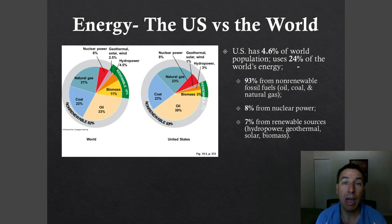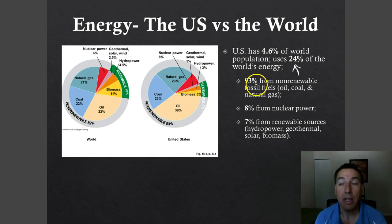That huge energy share is due to our affluence. If you remember from the very beginning of this class, we did the ecological footprint and found that Americans are very affluent, have a lot of resources, and therefore have a fairly large footprint — and one of those resources is our energy use.